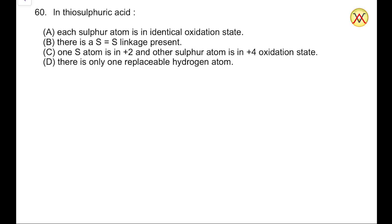Question number 60 is about thiosulfuric acid. There are four options: Option A says each sulfur atom is in an identical oxidation state. Option B says there is one sulfur-sulfur linkage present. Option C says one sulfur atom is in +2 oxidation state and the other is in +4. Option D talks about the number of replaceable hydrogen atoms, saying there is only one.